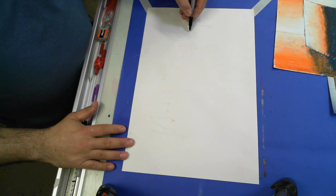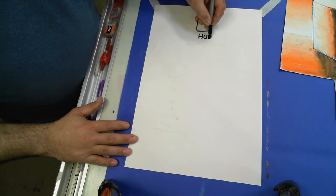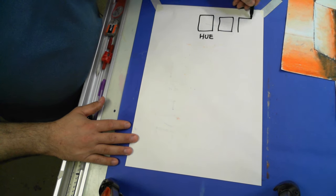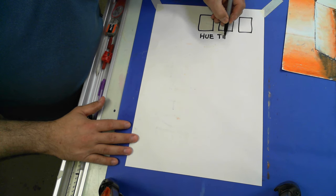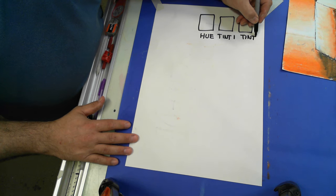And I'm going to start with a square in the center that I call hue, and that is going to be my color straight up. Then I'm going to make two squares where I've got tint 1 and tint 2.